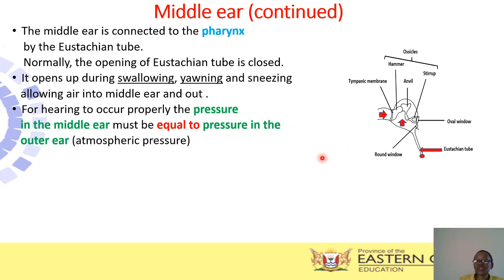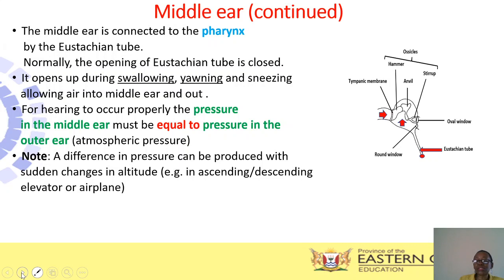The pressure in the middle ear must be equal to the pressure in the outer ear — or equal to the atmospheric pressure — so that your hearing occurs properly. Otherwise, if the pressure between the middle ear and the outer ear is not equal, you won't hear properly. When do we experience changes in pressure? For example, when you are in an ascending or descending elevator or airplane, changes in altitude result in changes in atmospheric pressure, and this can cause unequal pressure and discomfort in the ear.